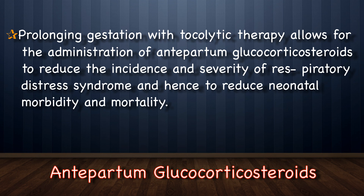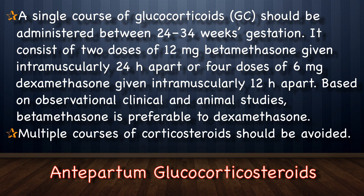Prolonging gestation with tocolytic therapy allows administration of antenatal glucocorticoids to reduce the incidence and severity of respiratory distress syndrome and reduce neonatal morbidity and mortality. A single course should be given between 24 and 34 weeks, consisting of either 2 doses of 12 mg betamethasone intramuscularly 24 hours apart, or 4 doses of 6 mg dexamethasone intramuscularly 12 hours apart. Betamethasone is preferable to dexamethasone based on observational, clinical, and animal studies. Multiple courses of corticosteroids should be avoided.